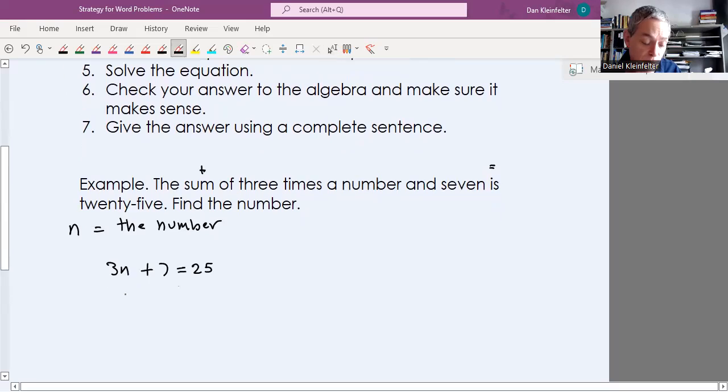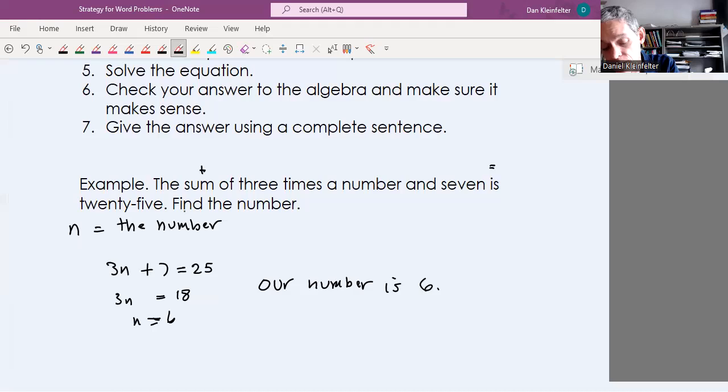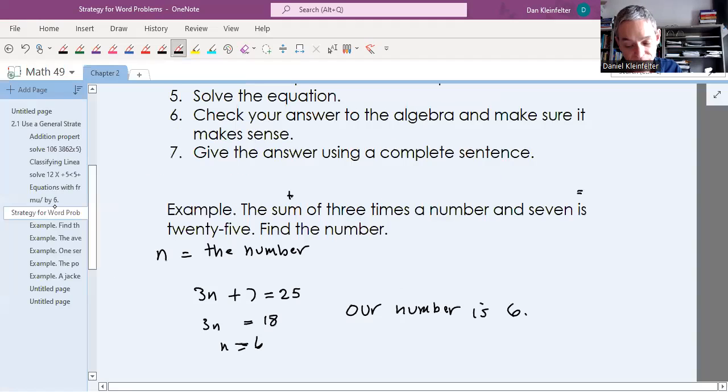From here, it should be pretty straightforward to solve. So we will subtract seven from both sides, three N is 18. So that N is six. So our number is six. And you can check and make sure that it fits the question. Three times six is 18. And then if you add seven, you will get 25. So that sounds reasonable.